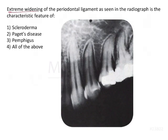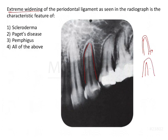The question is: extreme widening of the periodontal ligament space as seen in the radiograph is a characteristic feature of what condition? Normally, the PDL space around a tooth is only so much. In some conditions, it can widen up to even 10 times normal. Let's see which conditions can cause widening of the PDL space.